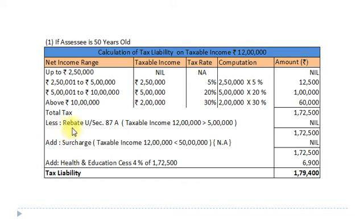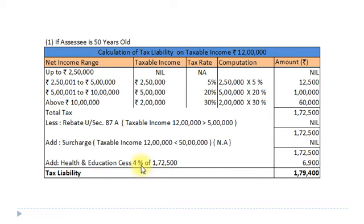Rebate under Section 87A will not be allowed since taxable income is greater than Rs. 5 lakh – that is nil. Surcharge is also not applicable as taxable income is less than Rs. 50 lakh – nil. Tax amount remains Rs. 1,72,500. Adding Health and Education Cess at 4% of Rs. 1,72,500 = Rs. 6,900. Final tax liability: Rs. 1,79,400 for an assessee of 50 years old.